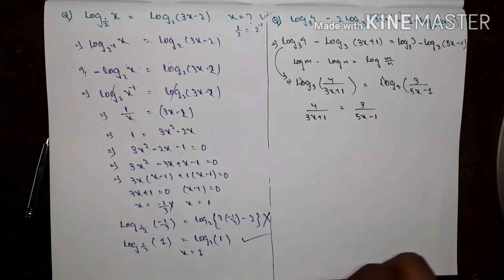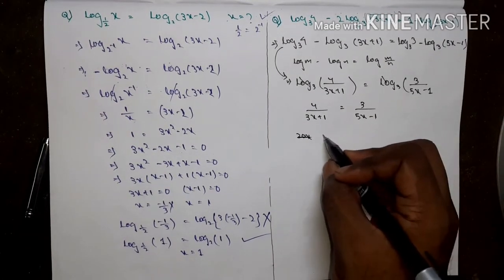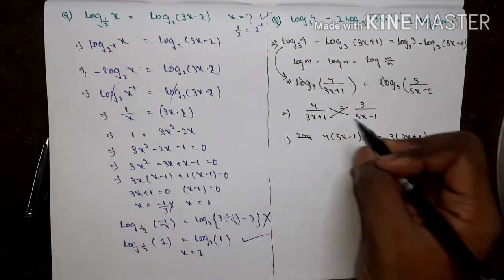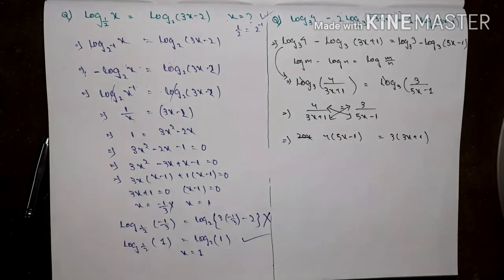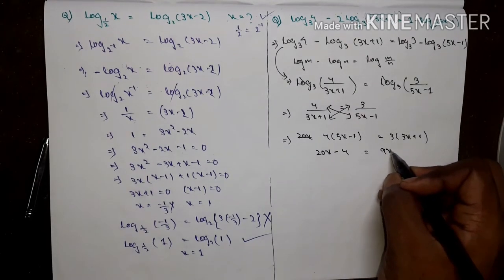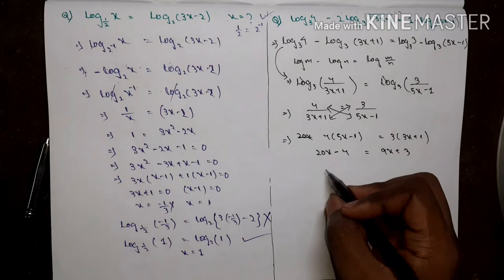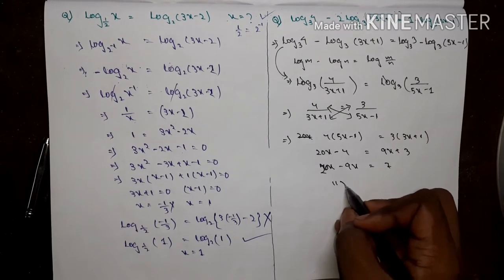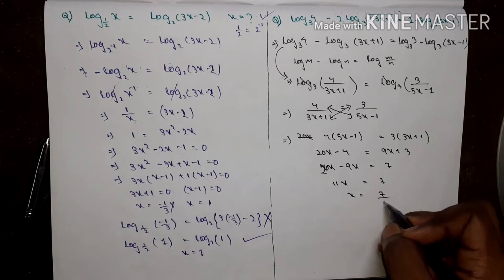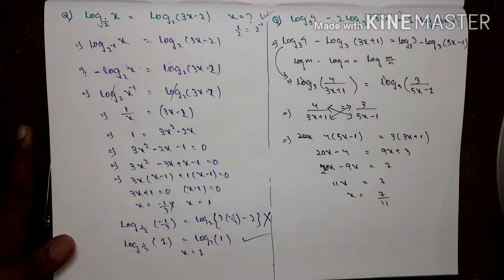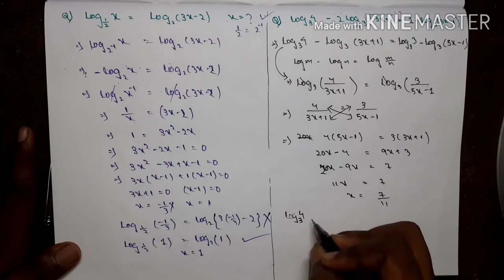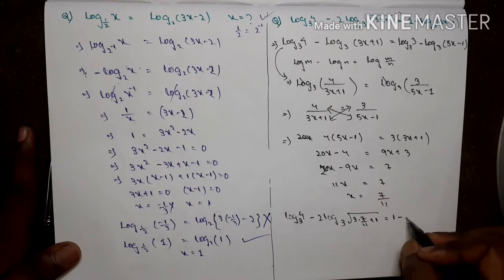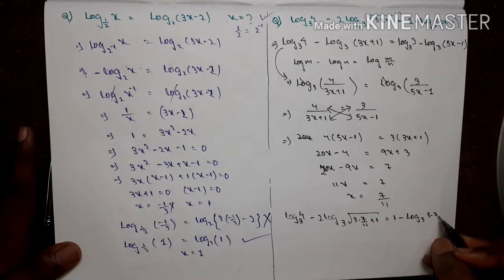Cancelling log_3 on both sides: 4/(3x+1) equals 3/(5x-1). By cross multiplication: 4(5x-1) equals 3(3x+1), giving 20x minus 4 equals 9x plus 3. So 11x equals 7, therefore x equals 7/11.